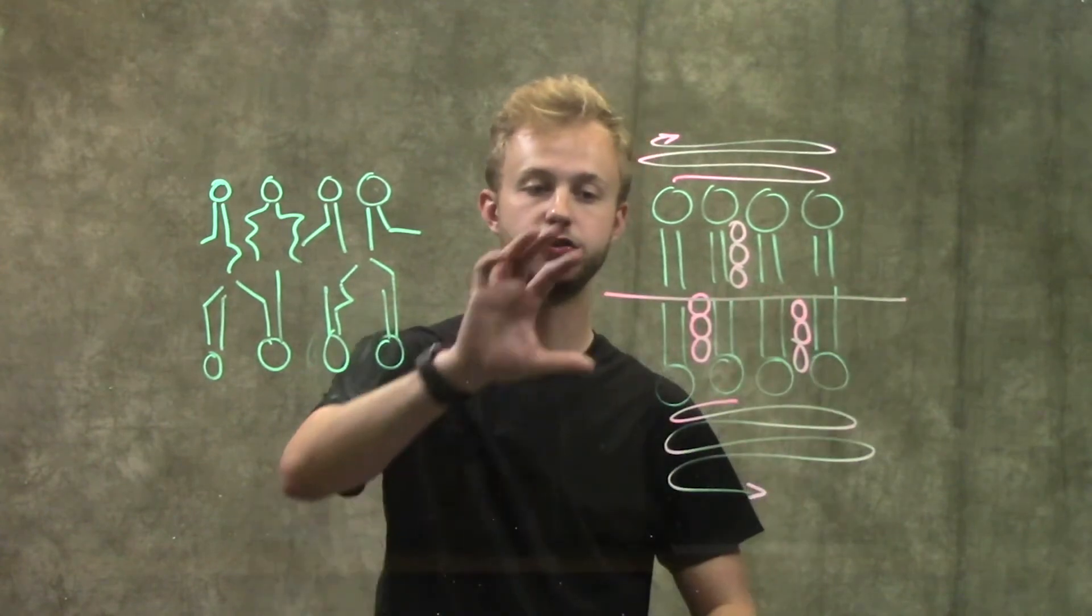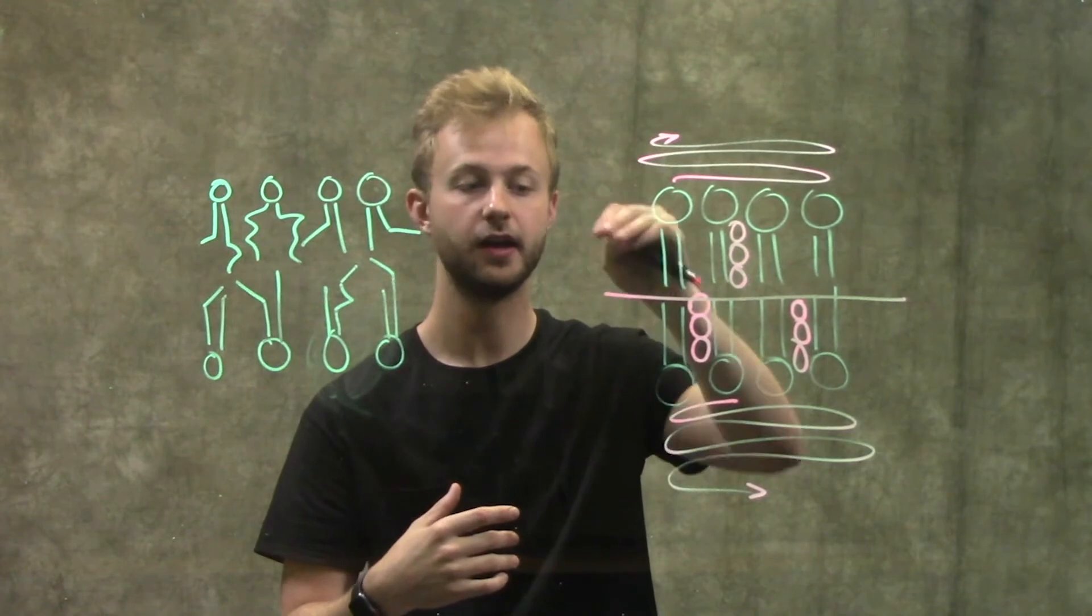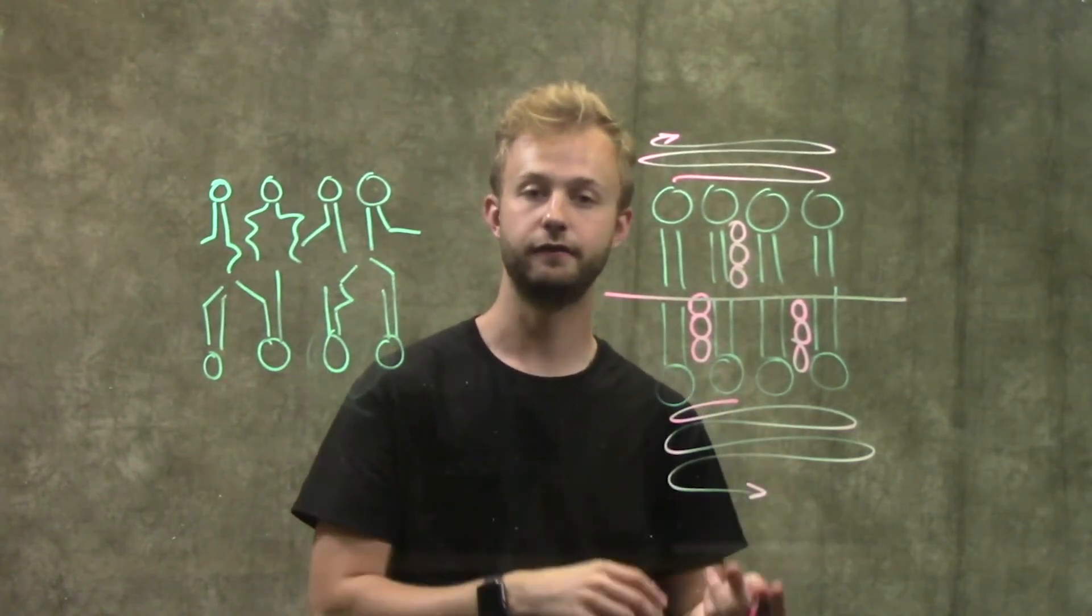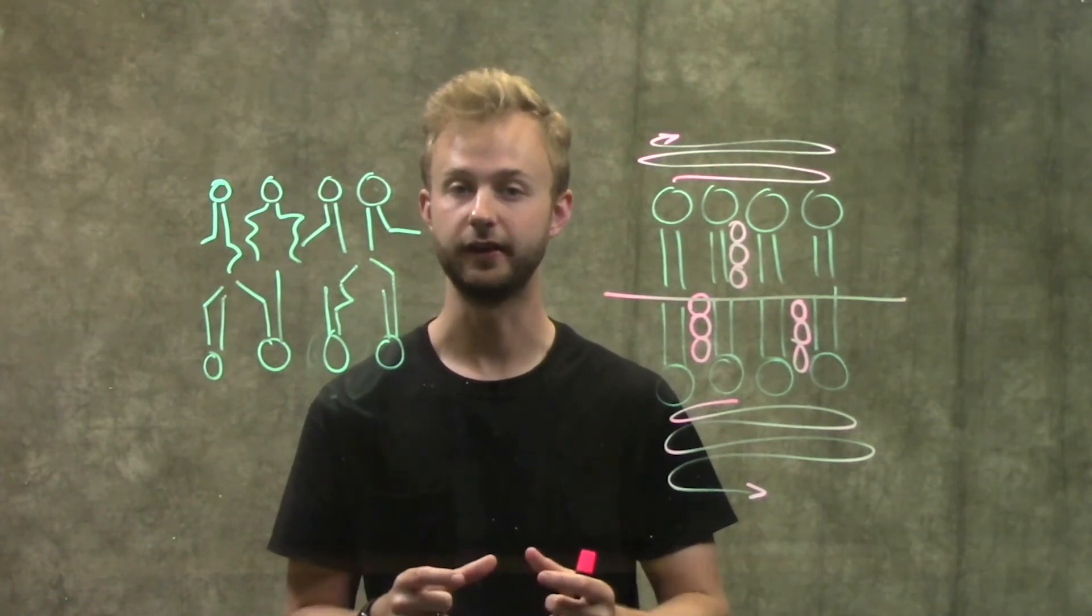The two halves of a membrane are called leaflets. You have your outer leaflet and your inner leaflet. When you have the phospholipids doing lateral mobility, they're going to stay within the same leaflet.